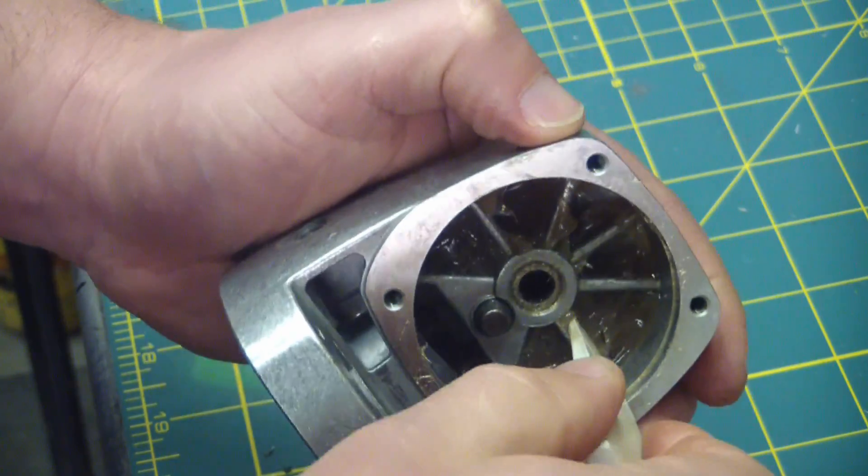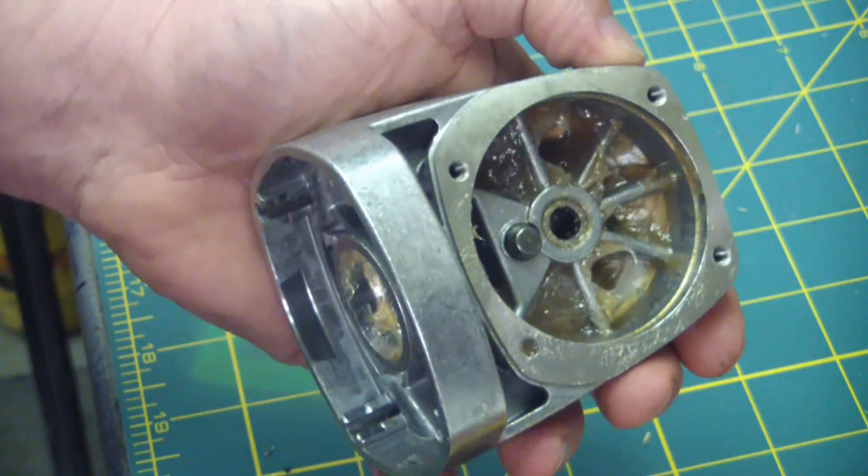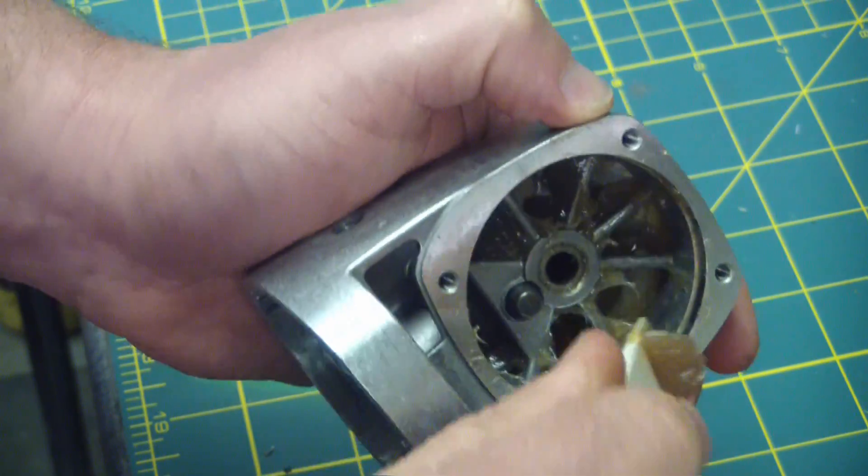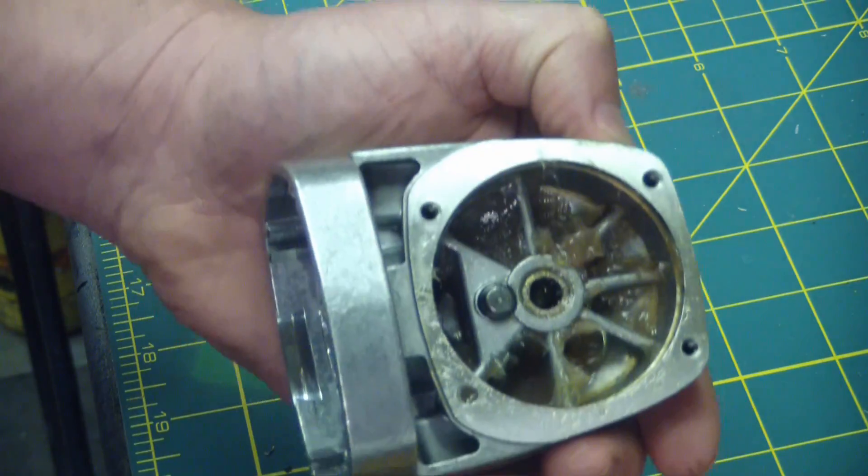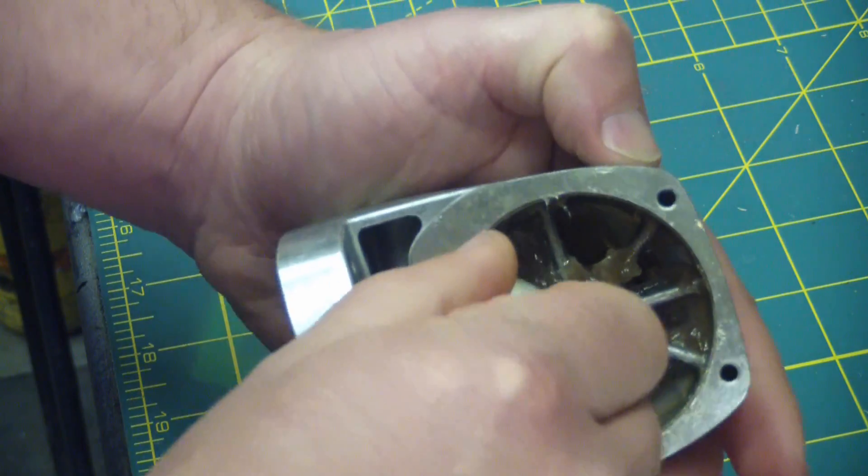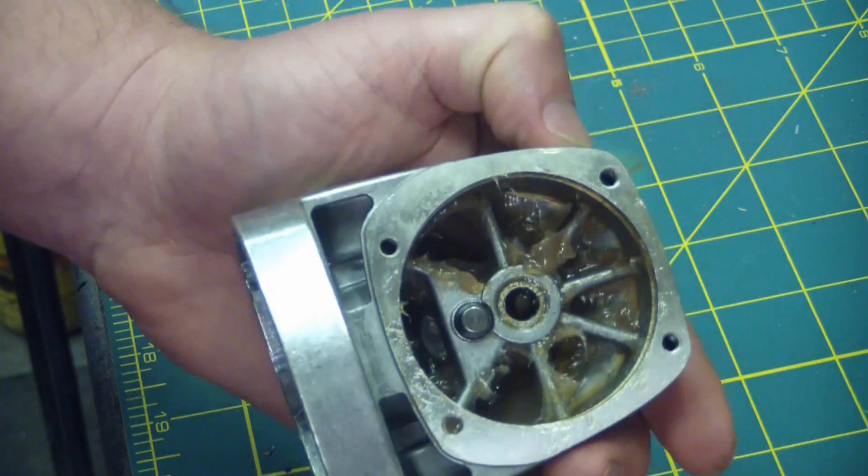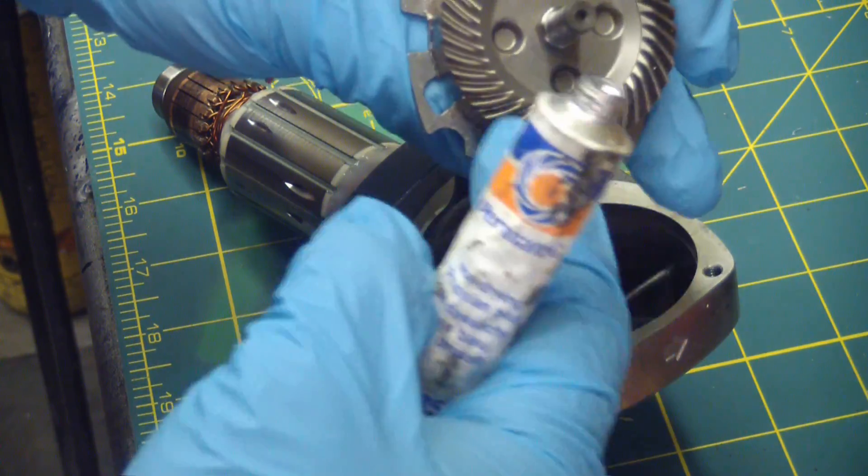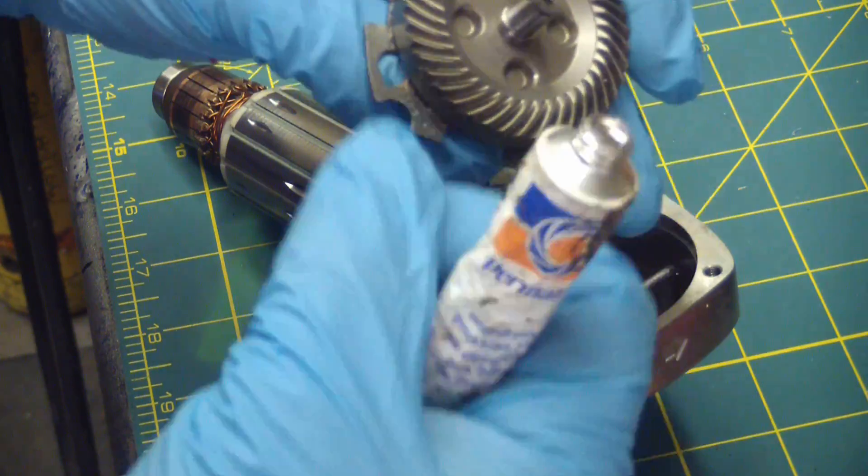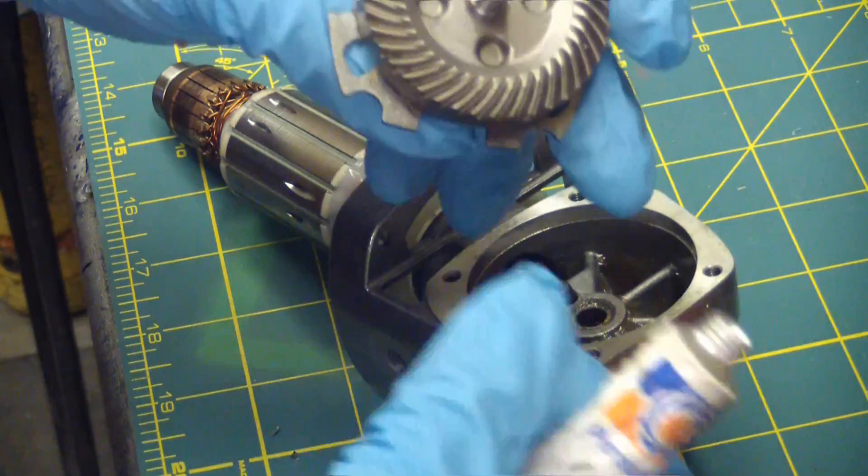Just taking the grease out of here because I'm going to blue the gear to see the contact pattern. I was so impressed by the fact that they actually had chimneys in there that I wanted to see if it was actually doing anything. I'm going to use some Prussian blue here to blue this gear. We'll see the contact pattern, very rich color.